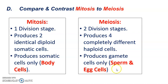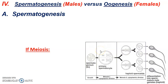As far as meiosis goes in men versus women, the overall process is very similar. However, the overall outcome is going to be slightly different. Meiosis in males is referred to as spermatogenesis, and meiosis in females is referred to as oogenesis. Genesis means creation; spermato means sperm; O means ovum, or what the egg cell is going to be.